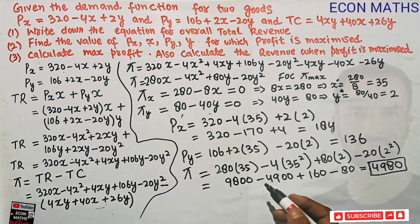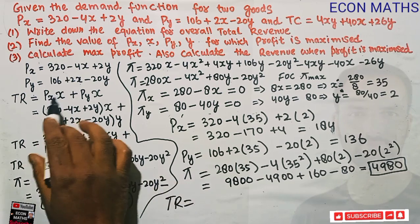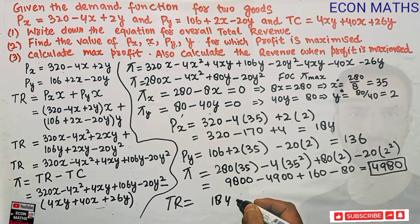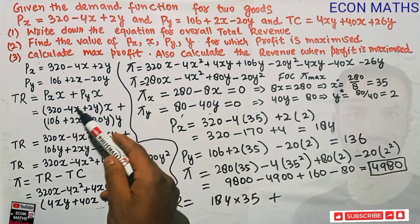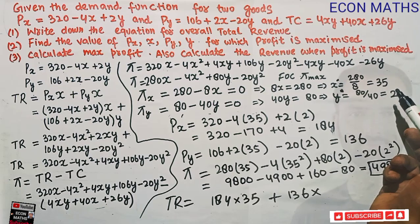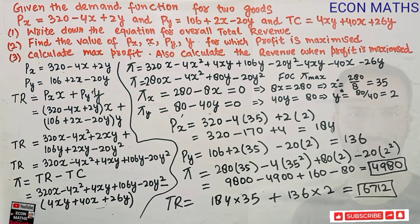Finally, we calculate total revenue when profit is maximized. TR = P_X · X + P_Y · Y = 184 × 35 + 136 × 2 = 6440 + 272 = 6712. So total revenue at the profit-maximizing point is 6712. I hope this was clear — if you liked the video, please share and subscribe.